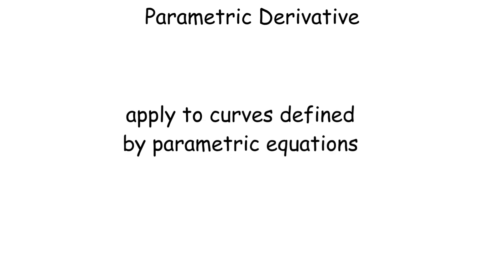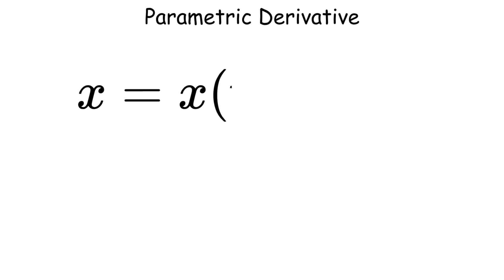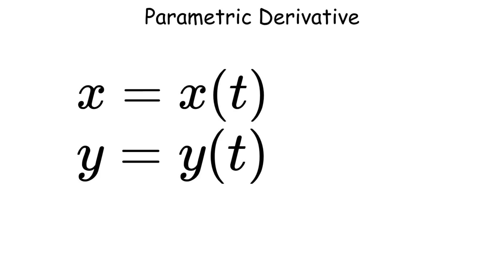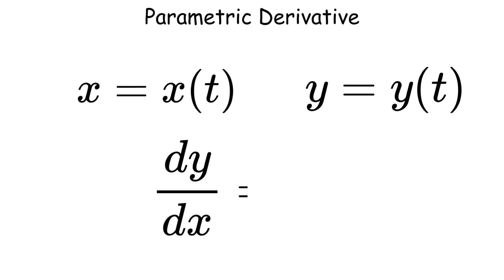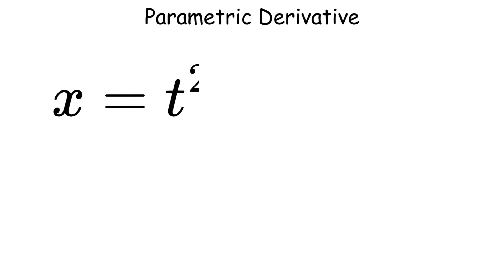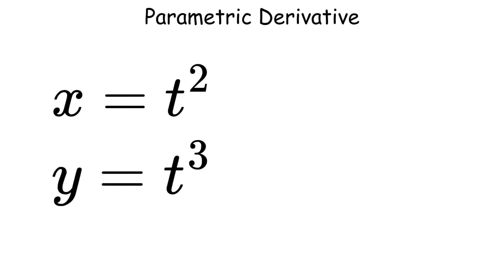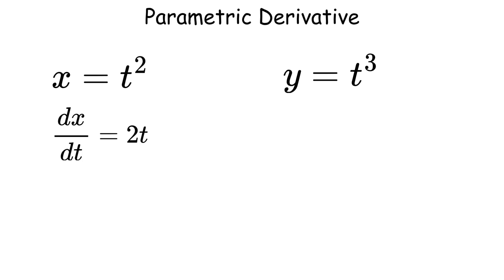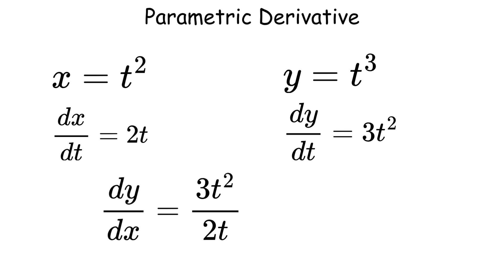Parametric derivatives apply to curves defined by parametric equations, such as x equals x of t, y equals y of t. The derivative dy over dx is found as dy over dt divided by dx over dt. For example, for x equals t squared and y equals t cubed, we have dx over dt equals 2t, dy over dt equals 3t squared, so dy over dx equals 3t squared over 2t, which simplifies to 3t over 2. This is essential in motion analysis and computer graphics.